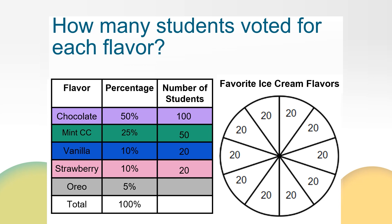I know that oreo represents 5% of the vote. Think about the relationships we've discussed so far — how might those help you determine how many students represent 5%? If you recognize that 5% is half of 10%, you might have thought about it as 10 is half of 20. When we add the number of students that voted for each category, we should get 200. The sum of 100 plus 50 plus 20 plus 20 plus 10 is equal to 200.